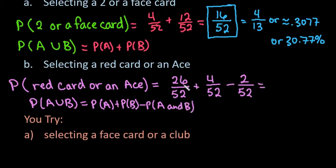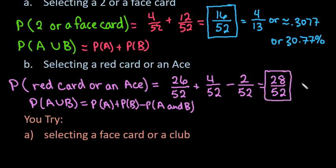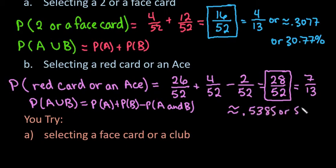Simplifying: 26 plus 4 is 30, minus 2 gives 28 out of 52. You can leave it as an unreduced fraction, reduce it to 7 over 13 by dividing both by 4, or write it as a decimal: approximately 0.5385, or 53.85%. Any one of these is an acceptable way of writing the answer — it depends on your preference.